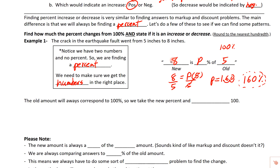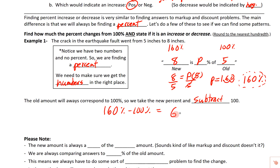The new value is 160% of the old value. Since it went from 100% to 160%, it went up 60%. The old amount always corresponds to 100%, so we always take the new percent and subtract 100. We take 160% minus 100%, and we end up with 60%. Since this is positive, the answer is a 60% increase.